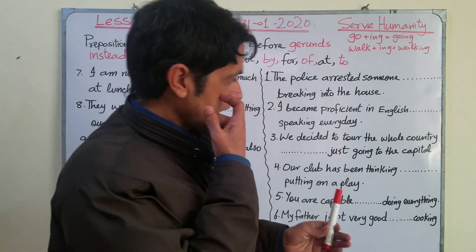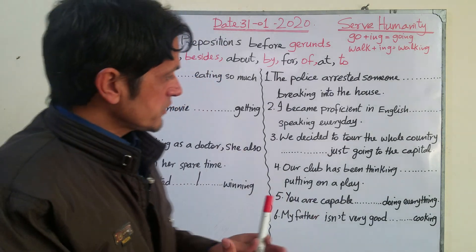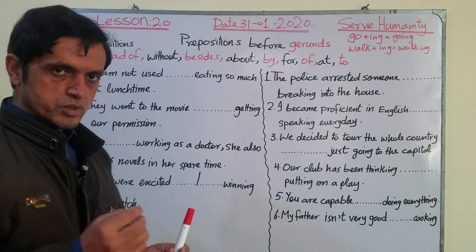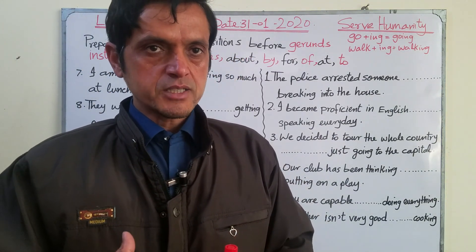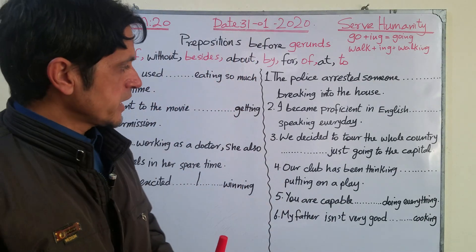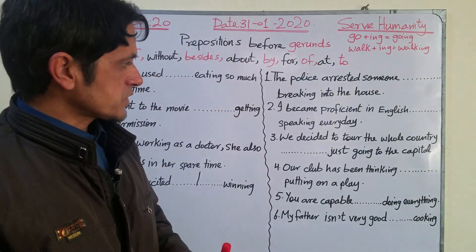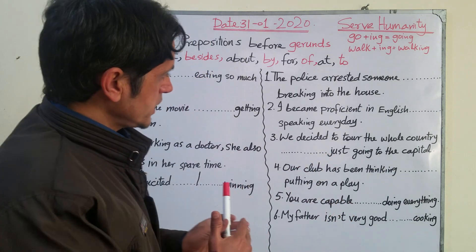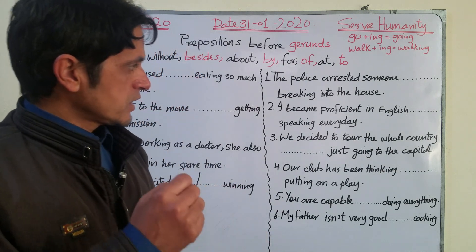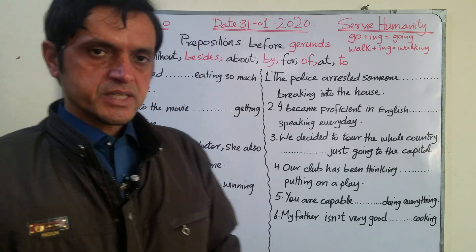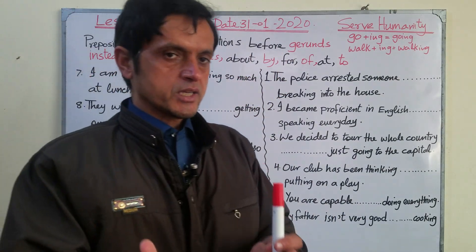Getting all correct will show your efficiency and proficiency in English and means you can pass every English exam in the world. If you get only two correct, you are still good but not fully proficient. If you get none correct, you are still weak. So the test is starting — I will read the sentences, you fill the blanks with me, then stop the video and complete them on your own.